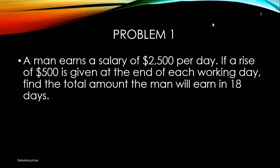Look at this first question. Mark has a salary of $2,500 per day. If a rise of $500 is given at the end of each working day, find the total amount Mark will earn in 18 days. So let's analyze it: the first term A is $2,500. The rise is constant, so the common difference D is $500. And the number of days N is 18.